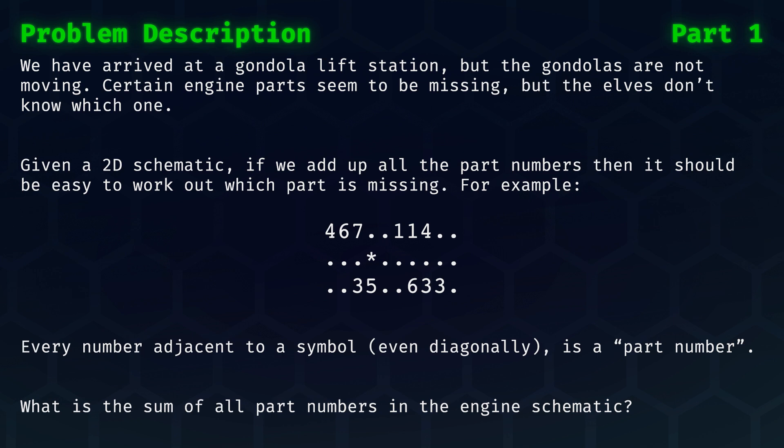An example of such a schematic is the following grid with numbers, dots, and symbols. Every number adjacent to a symbol, even diagonally, that is not a dot, is a part number. What is the sum of all part numbers in the engine schematic?